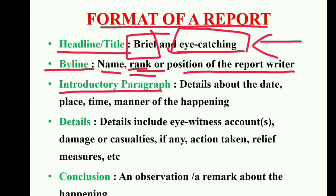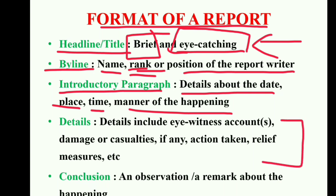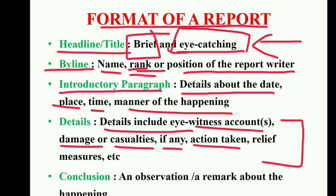Then comes the first paragraph. In the introductory paragraph you are going to give details about the date, place, time, and manner of happening. Then we will move towards the second paragraph, which is the details section. Details include eye-witness account, damage or casualties if any, action taken, and relief measures.